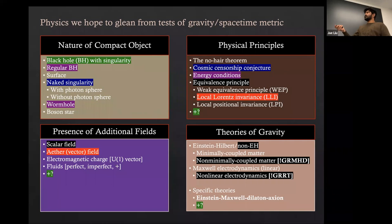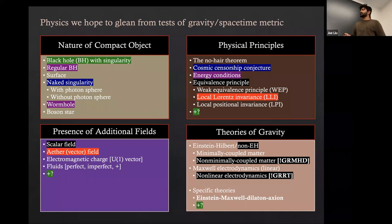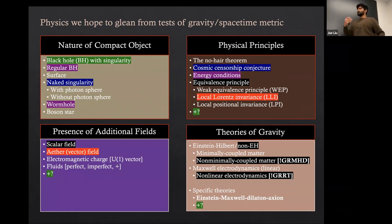We can look for violations of the energy conditions, which are associated with regular black hole solution models. We can also ask whether there are violations of the equivalence principle. These are the sorts of things we can test with access to strong field gravity. We can test the existence of additional fields in the description of physics, which various theories invoke — for example in cosmology — and ask whether these have any influence in the image of a black hole, whether they build up close to a massive black hole. We also want to look at alternative theories of gravity and understand whether the low energy effective limit receives corrections from a deeper quantum theory of gravity, visible in the spacetime closest to a massive black hole.